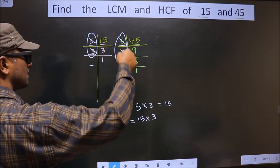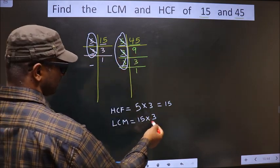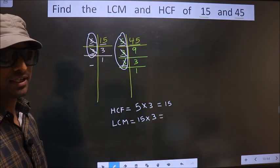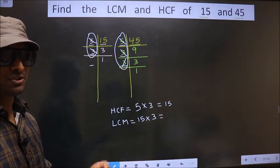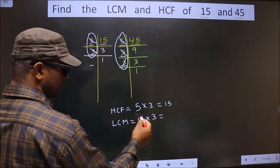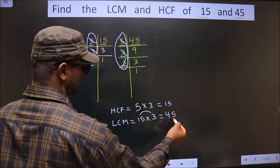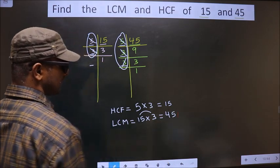Now each number has been cut. So now you multiply these numbers. Whatever number you get, that is your LCM. So let us multiply. That is 15 into 3, which equals 45. So this is our LCM and this is our HCF.